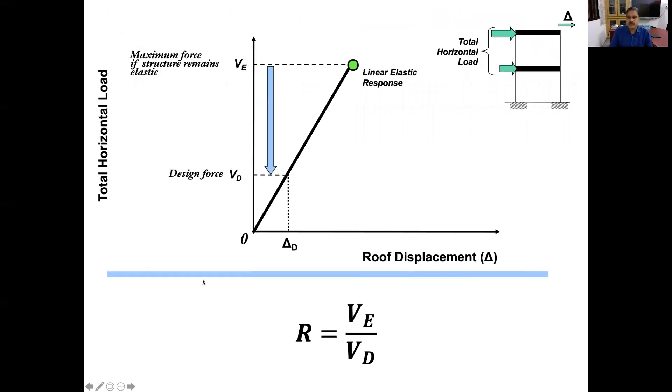Let us look at this graph and the building on the side here. This building is pushed by design base shear. As you can see in this graph, horizontal axis is displacement and vertical axis is base shear or total horizontal lateral force. VE is the elastic base shear and VD is the design base shear.